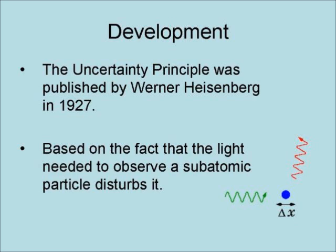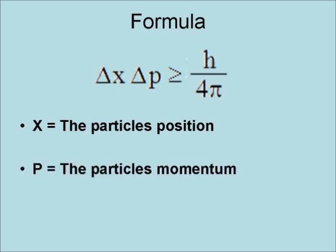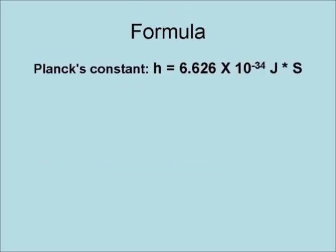Making measurements of it uncertain. The uncertainty principle is most commonly expressed as the change in x times the change in p is greater than or equal to h over 4 pi, where x is the particle's position, p is the particle's momentum, and h is Planck's constant equal to 6.626 times 10 to the minus 34th joule seconds.